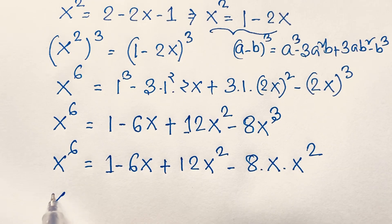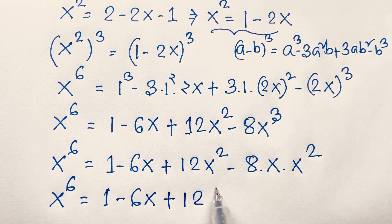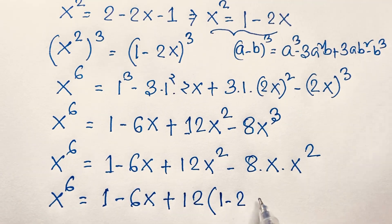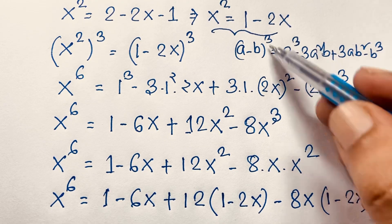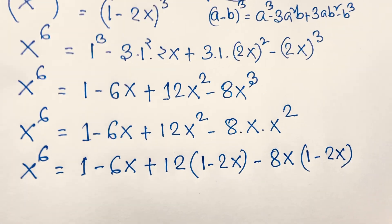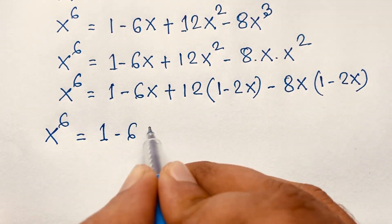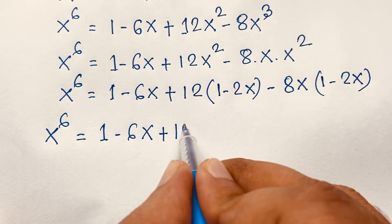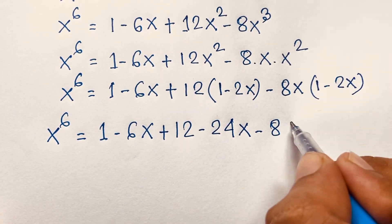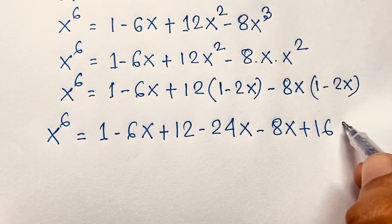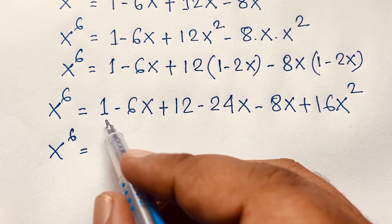Substituting x² = 1 - 2x into the expression: x^6 = 1 - 6x + 12x² - 8x·x². Replace x² with (1 - 2x): 12x² = 12(1 - 2x) = 12 - 24x. So we get x^6 = 1 + 12 - 6x - 24x - 8x·(1 - 2x), which is 13 - 30x - 8x(1 - 2x).